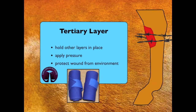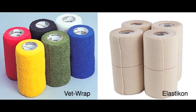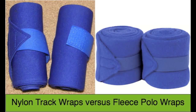The tertiary layer of a bandage is the final layer and holds all the other layers in place, applying pressure and protecting the wound from the environment. Vet wrap and elasticon are examples of tertiary bandages, as are nylon track wraps. It is important to know the difference between nylon track wraps and fleece polo wraps. While they may look the same, fleece polo wraps are soft and squishy, designed to protect the horse's lower limb from the accidental impact of a polo mallet, and should not be used as a tertiary layer.